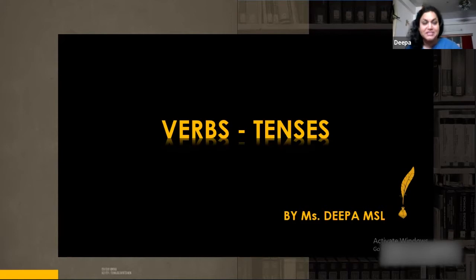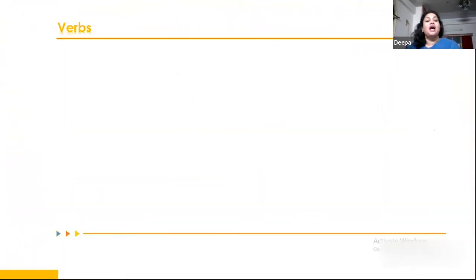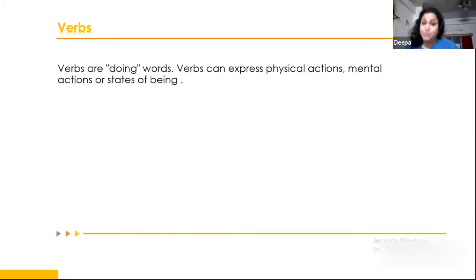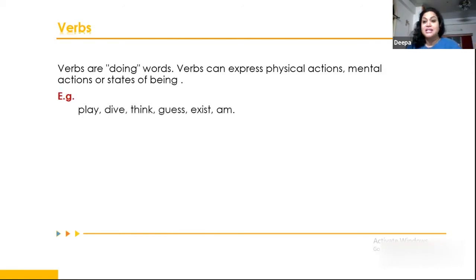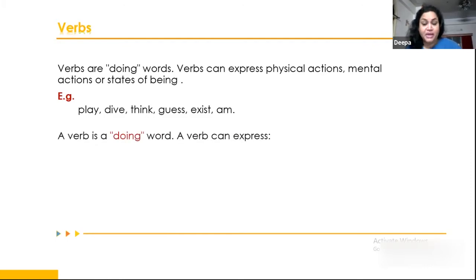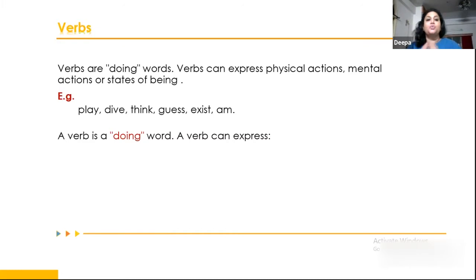What are verbs? Verbs are basically doing words or action words, and they express physical actions, mental actions, or states of being. Examples include: play, die, think, guess, exist, am. These are all kinds of doing words. They can be physical, mental, or states of being. Don't add an -ing form because that is the progressive part, which we'll learn about later.